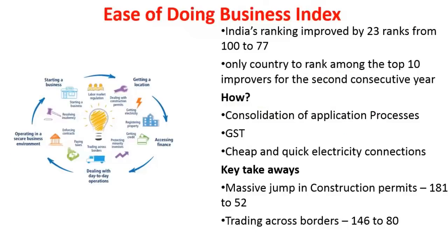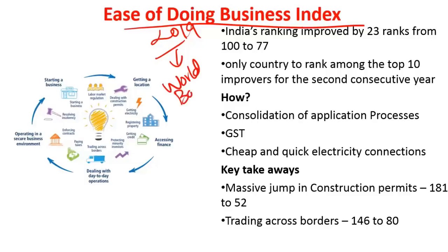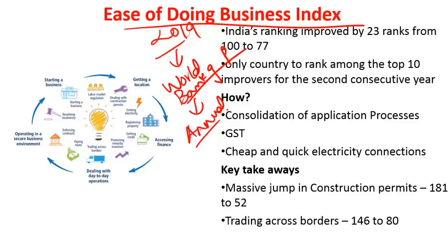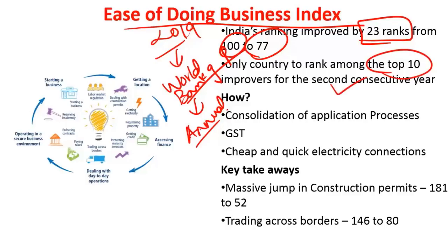The next article is about the Ease of Doing Business Index 2019, released by the World Bank Group every year. As per its 2019 projections, India increased its ranking by 23 positions, moving from rank 100 in 2018 to position 77. By making this significant jump, India became the only country among the top 10 improvers to improve its position for the second consecutive year.